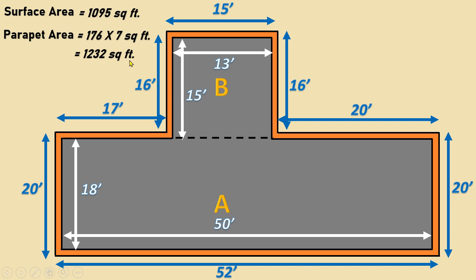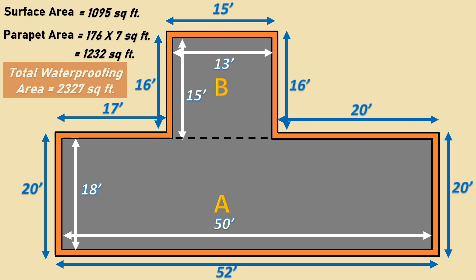This 1,232 square feet is the exposed surface area of the parapet wall. Adding the terrace surface area plus the parapet wall area gives the total waterproofing area: 1,095 + 1,232 = 2,327 square feet. This is the total area on which we will be making the waterproofing treatment.